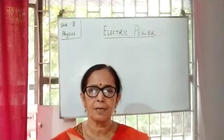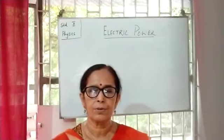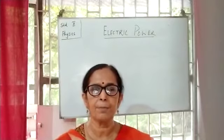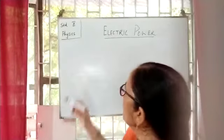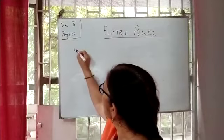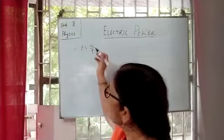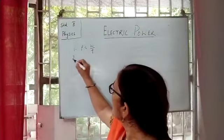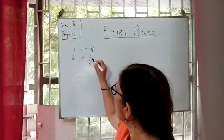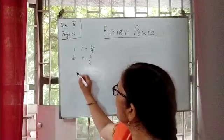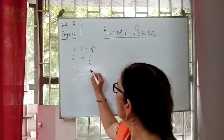We have some relations that help us to calculate electric power. The first relation: power is equal to W by T. This we studied in standard 9. The second relation: power is equal to E by T, that is the rate at which energy is consumed. Power is also equal to V into I.